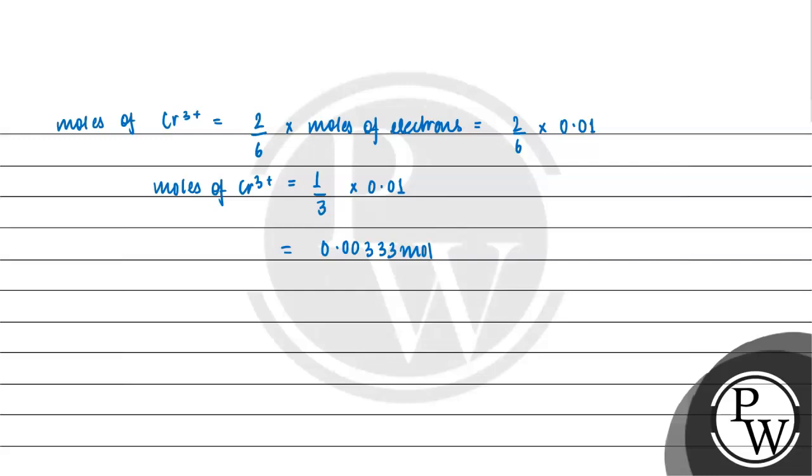Let us calculate the theoretical mass of Cr^3+ ions. Theoretical mass of Cr^3+ ions = moles of Cr^3+ × atomic mass of chromium = 0.00333 × 52. The atomic mass of chromium given is 52. So our theoretical mass comes out to 0.1732 grams.